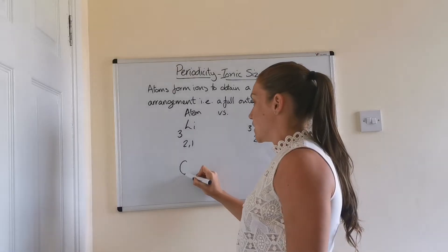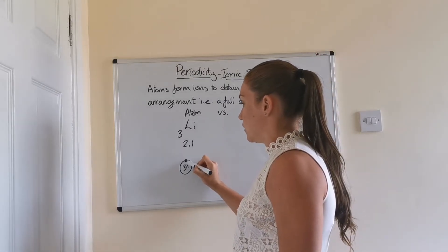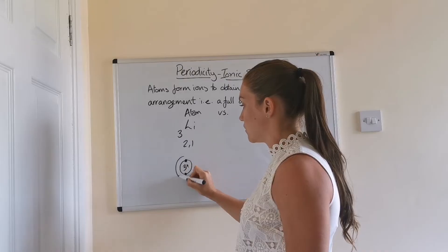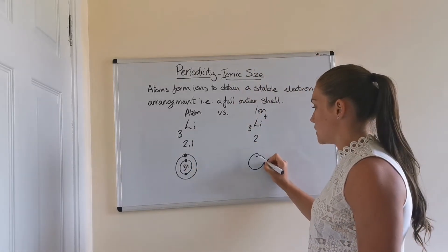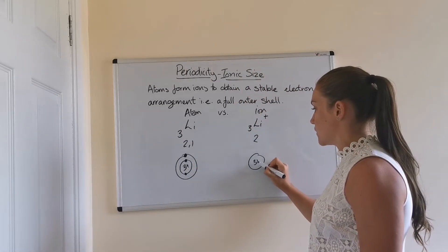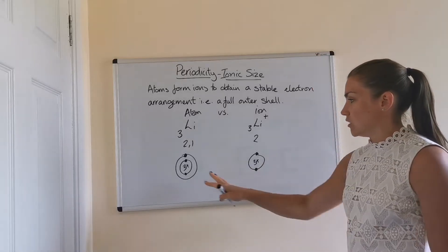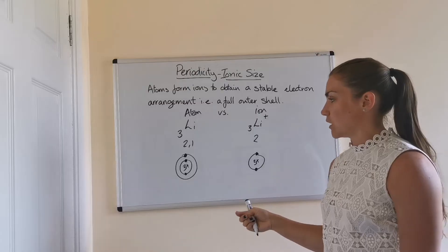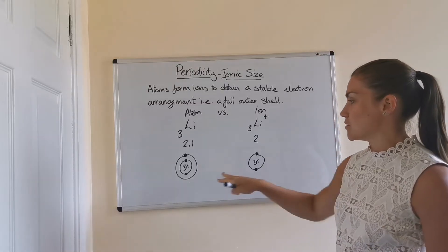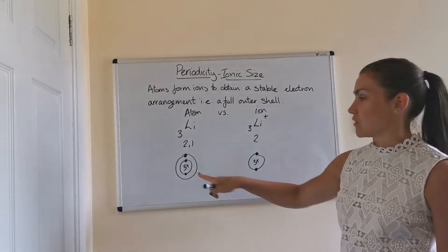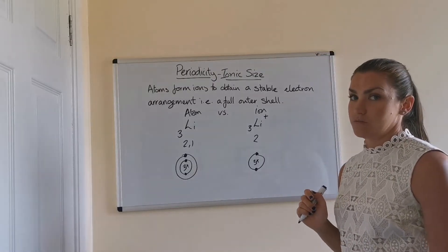We can draw these to help make it more obvious. This is the lithium atom, and then the lithium ion — it's still 3 positive in the middle, but it's only got the 2 electrons. You can see from the picture very quickly and clearly that the lithium atom is bigger than the lithium ion because it has one extra occupied electron shell.